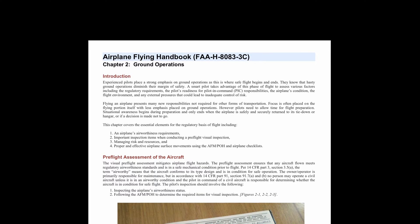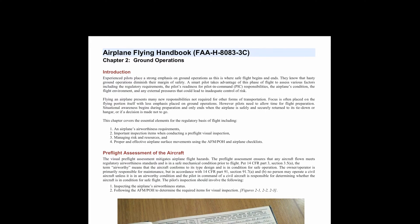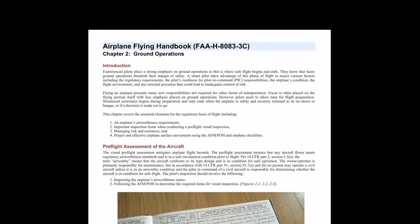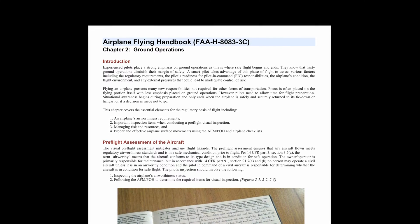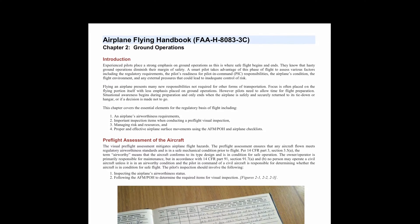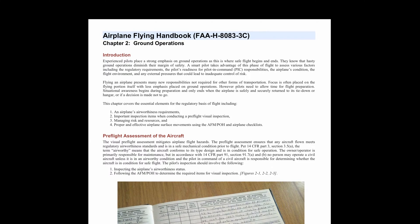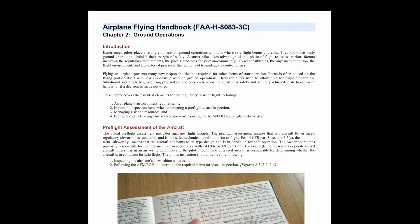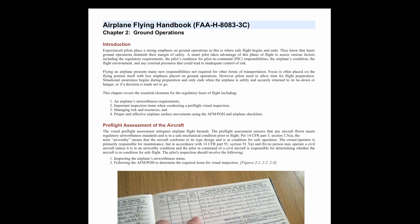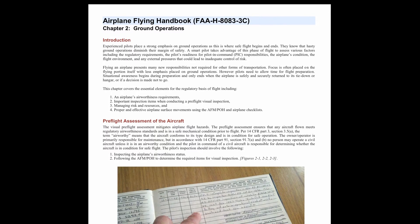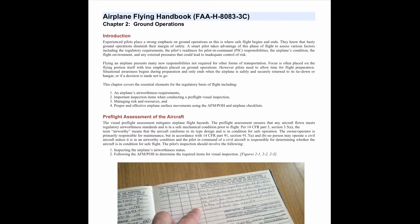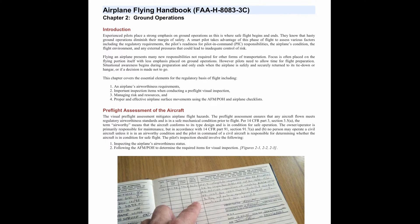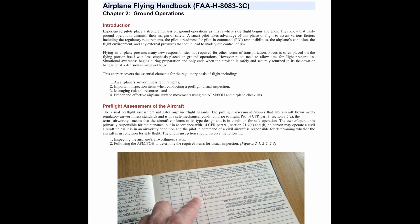This chapter covers essential elements for the regulatory basis of flight, including: 1. An airplane's airworthiness requirements. 2. Important inspection items when conducting a pre-flight visual inspection. 3. Managing risk and resources. 4. Proper and effective airplane surface movements using the AFM or POH and airplane checklists.